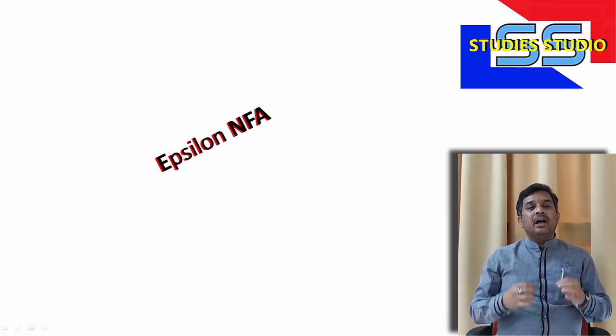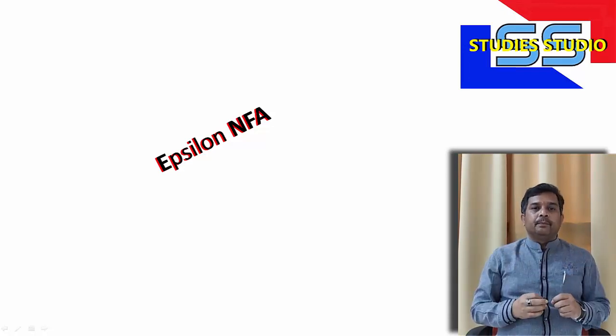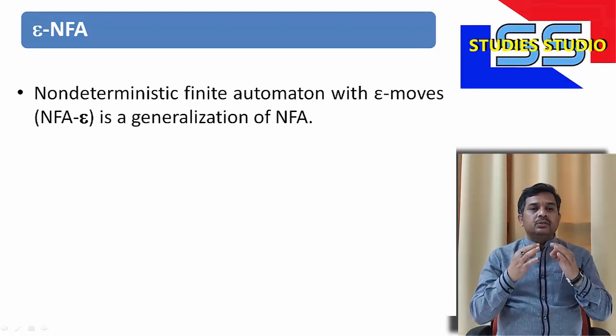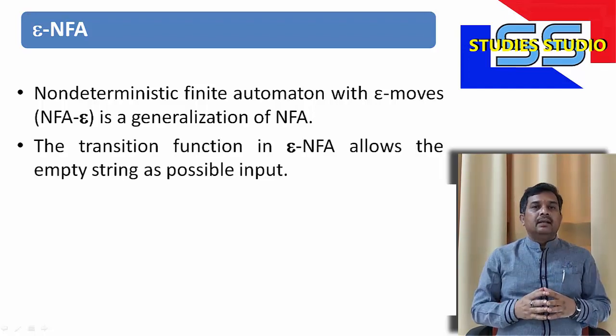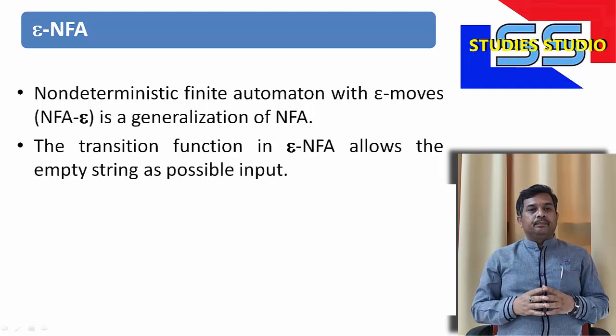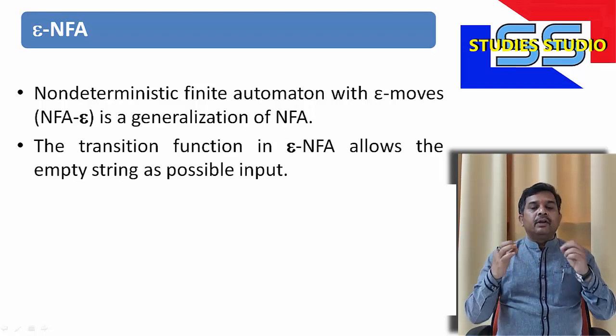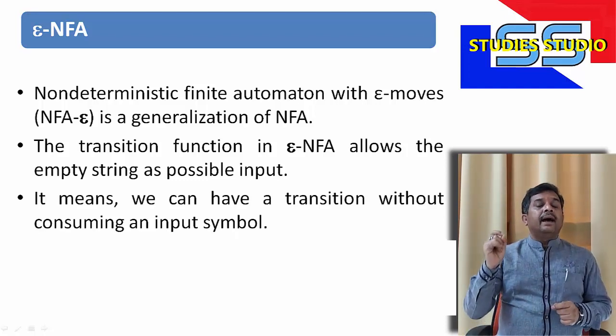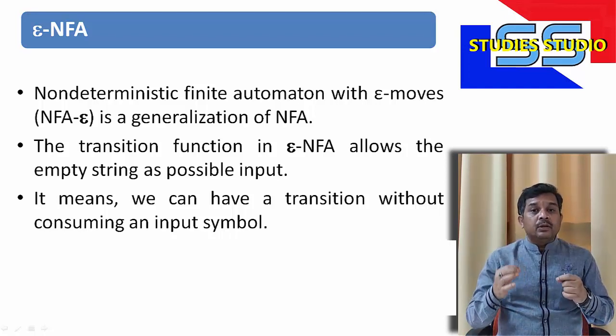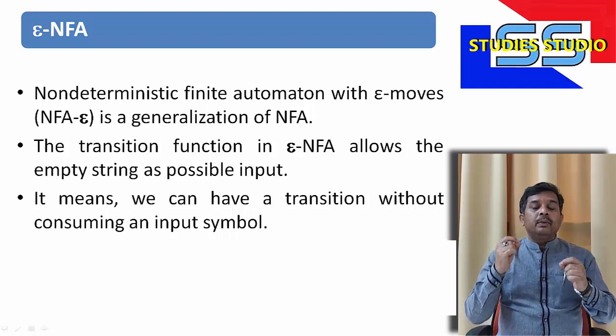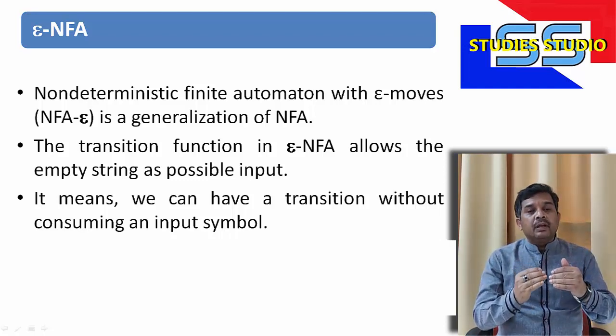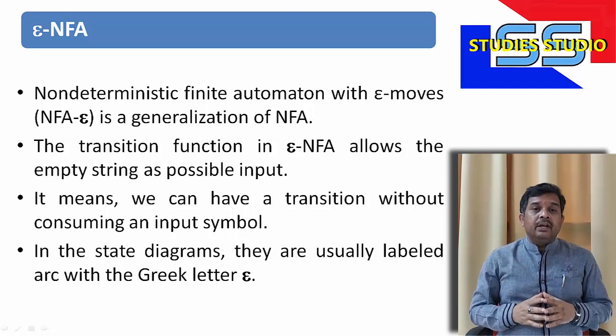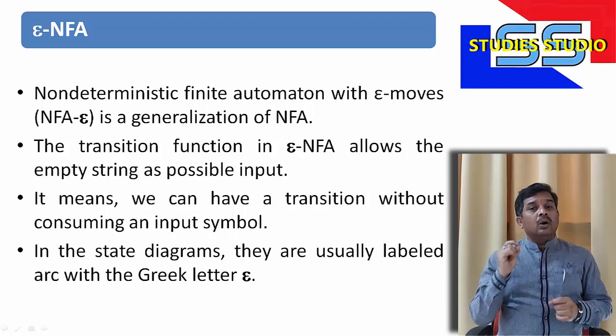In our previous videos, we have already seen what is DFA and what is NFA. Today we are going to look into epsilon-NFA. Basically, epsilon-NFA we use in non-deterministic finite automata. It is also known as epsilon moves on NFA. Basically, it is a generalization of non-deterministic finite automata. In epsilon-NFA, empty strings are also given as possible inputs. It means whenever we are using an epsilon move, we are not consuming any input symbol, but still then we are moving from one state to other state, and it is represented in the form of a Greek letter epsilon.